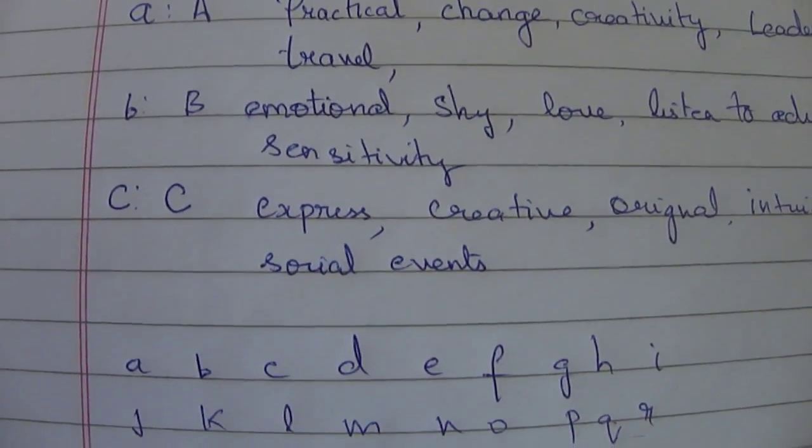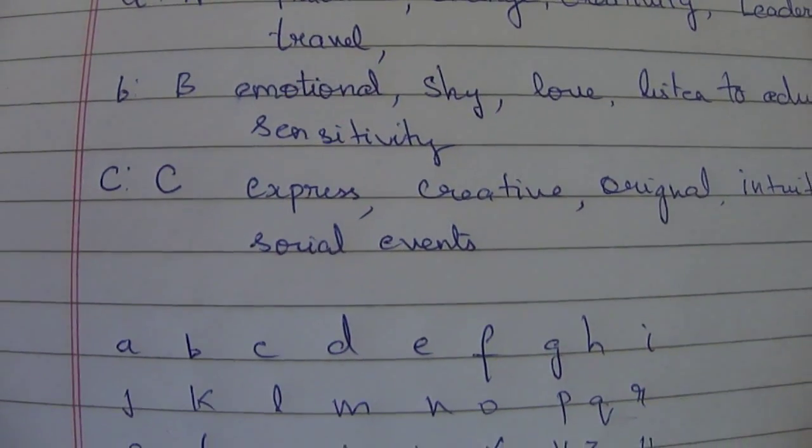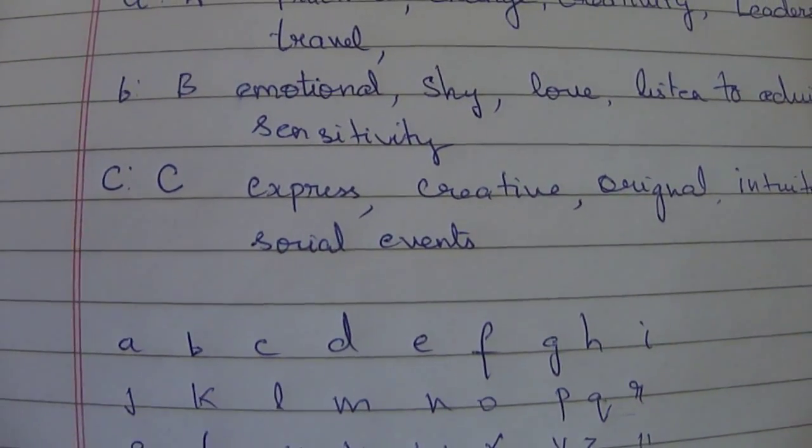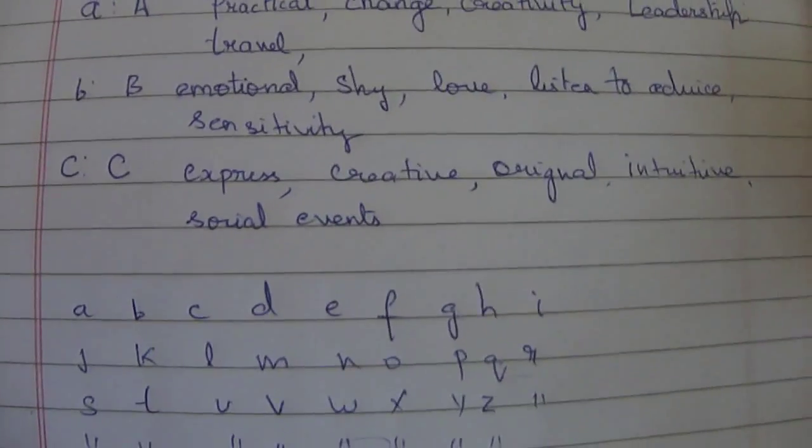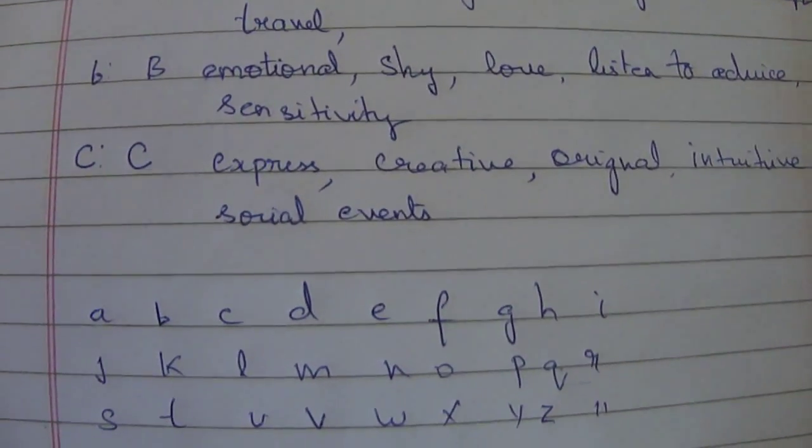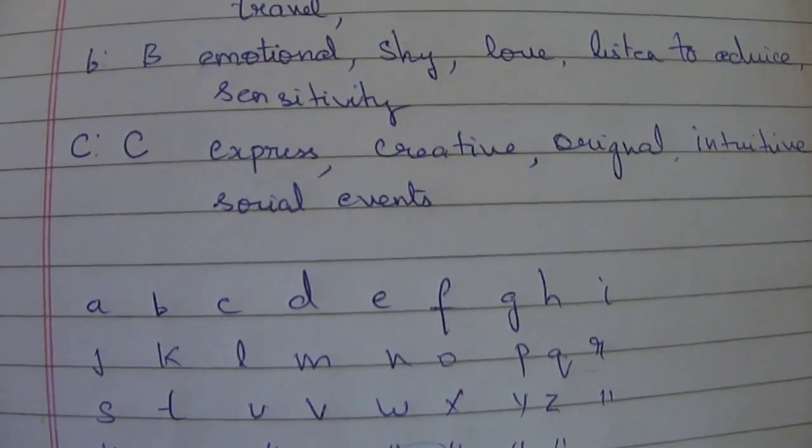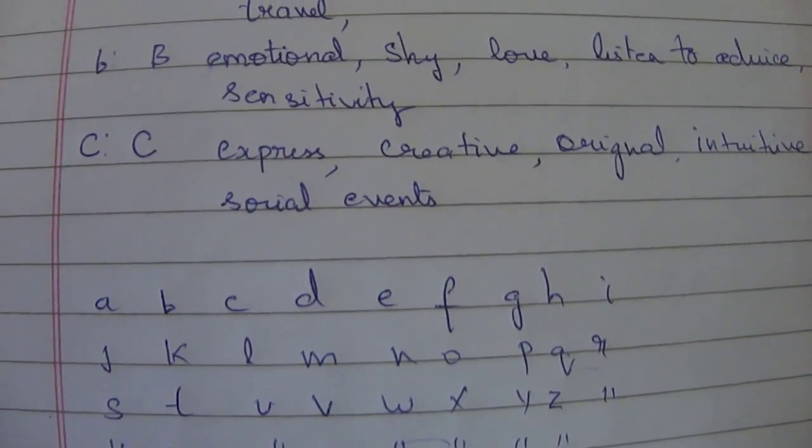Whereas going with the letter C, C is more of an expressive number, again more of a creative number, original number and also an intuitive number. It is also more like a Jupiterian letter so it indicates towards social events.